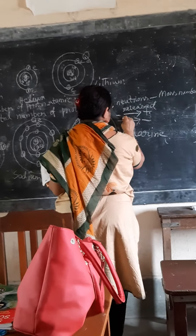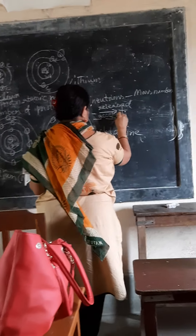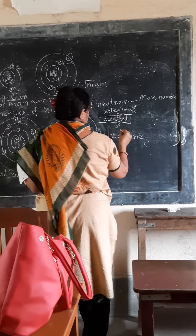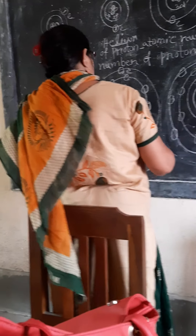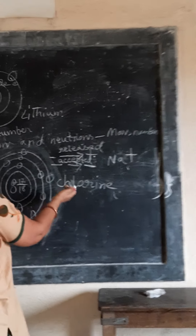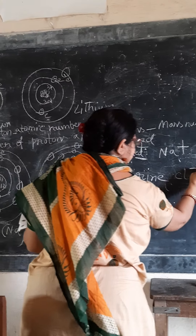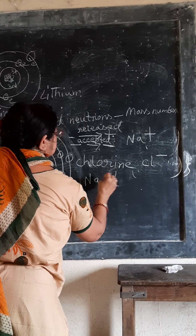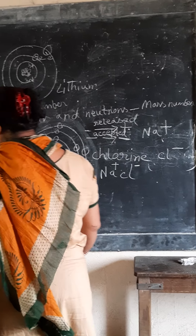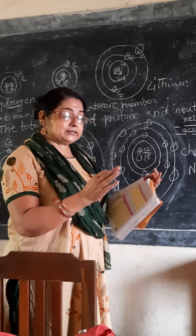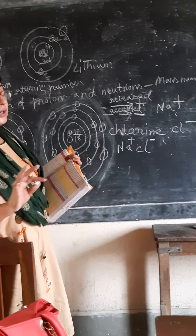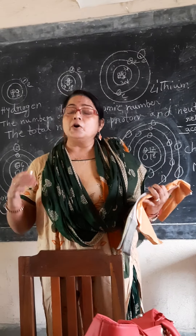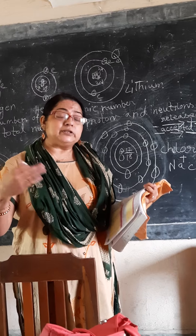The electron charge is released — accepted. What does accepted mean? Sodium ion releases one electron charge, so sodium becomes Na+. And the chlorine that comes accepts one electron, so it becomes Cl−. When sodium chloride is formed, it is in the form of Na+ Cl−. The element that releases an electron becomes a positive ion, and the element that accepts an electron becomes a negative ion. So the symbol of an electron is minus — negative charge. The one that gives negative charge becomes positive, and the one that releases negative charge becomes positive. Understand? Yes ma'am.